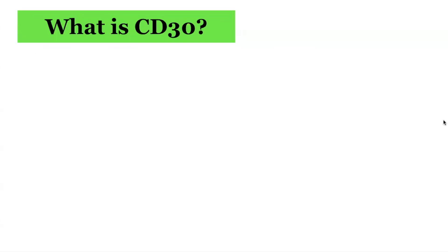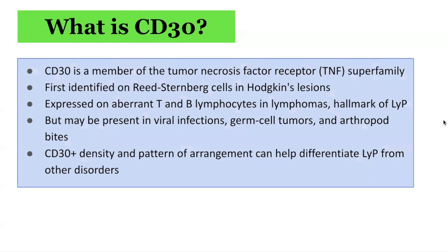CD30 is a member of the tumor necrosis factor receptor (TNF) superfamily. It was first identified on Reed-Sternberg cells in Hodgkin's lymphoma lesions. CD30 is expressed on aberrant T and B lymphocytes in lymphoma and is a hallmark of lymphomatoid papulosis. However, it can also be present in viral infections, germ cell tumors, and arthropod bites. CD30 density and pattern of arrangement can help differentiate between these diagnoses.